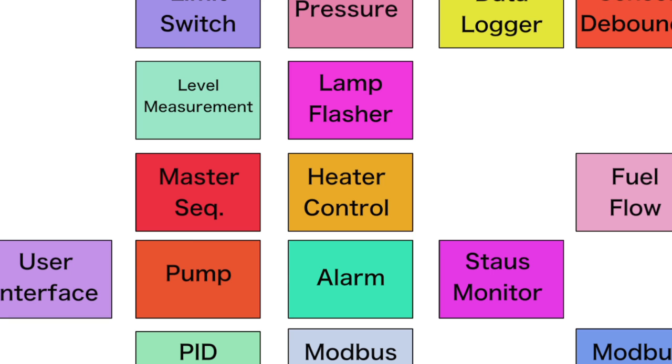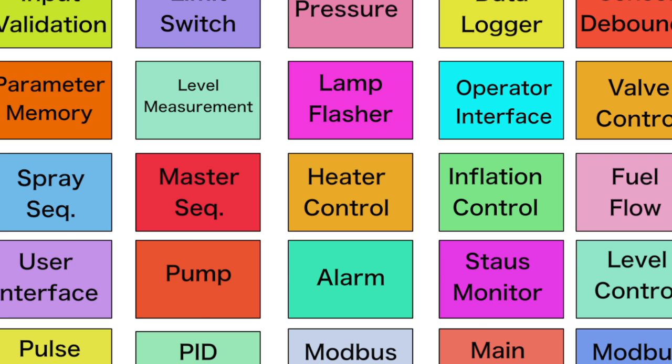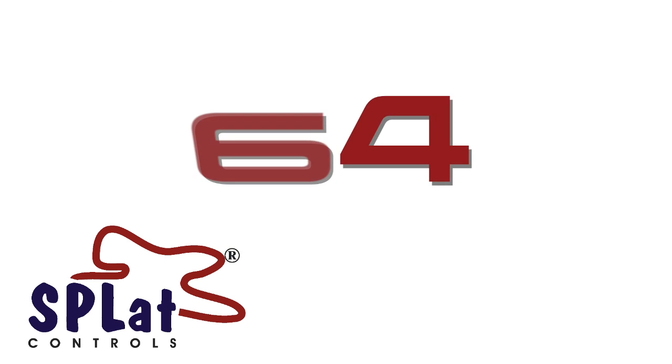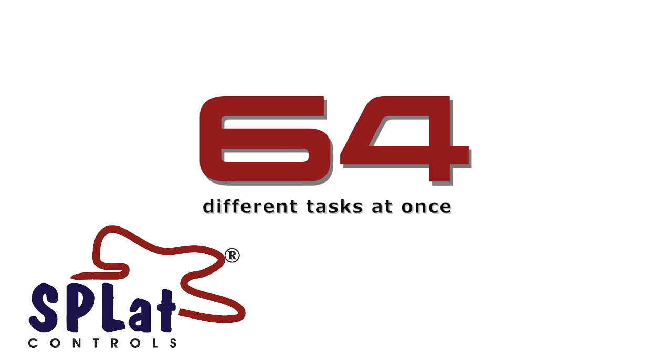It's intrinsically multitasking. So a Splat program can do 64 different things at once with none of the hazards of bolt-on RTOSs.